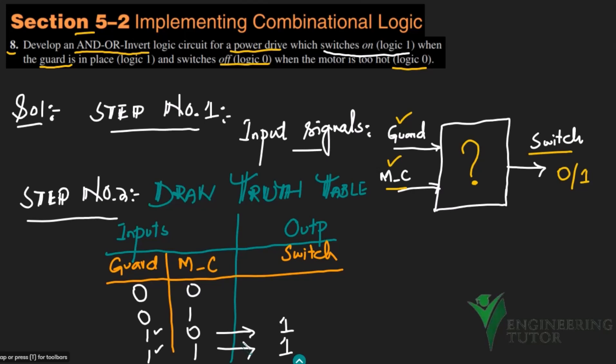The switch is off (logic 0) when the motor is too hot, meaning MC is zero. So the switch is off in those rows. When the guard is present but the motor is hot, the switch is still off because more priority is given to motor cool. When the guard is not present but the motor is cool, the switch is also off.